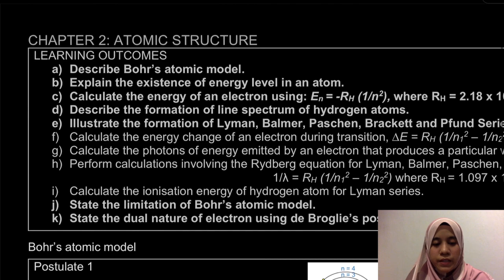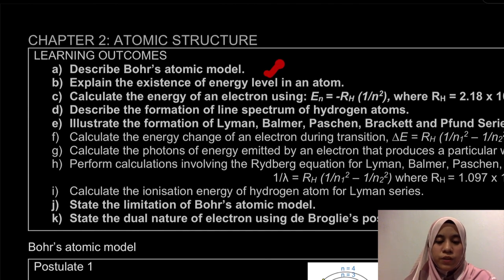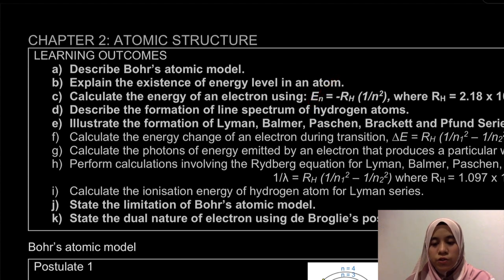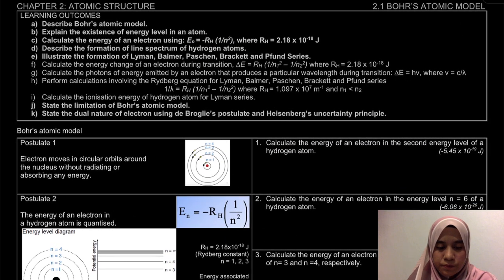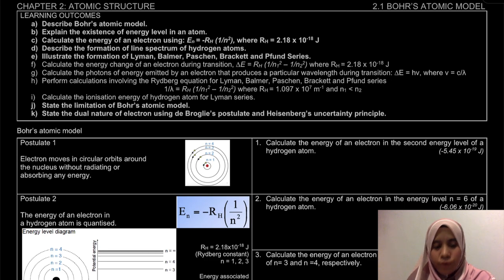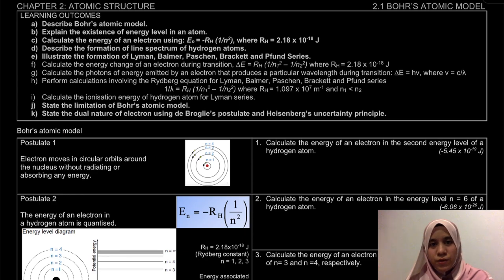We're going to look at 3 learning outcomes: first, we're going to describe the atomic model itself; second, we're going to explain the existence of energy levels in an atom; and third, we'll calculate the energy of an electron using this formula — which you have to memorize. Bohr's Atomic Model was proposed by a scientist called Niels Bohr, which is why it's called Bohr's Atomic Model.